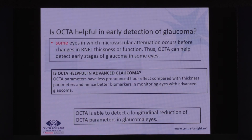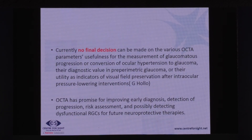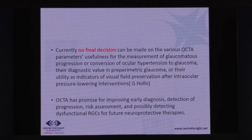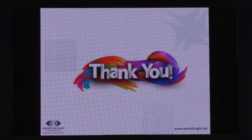Is OCTA helpful in detecting early glaucoma? In some eyes, microvascular attenuation occurs before changes in RNFL, so OCTA can possibly help — though we don't know which eyes these are. In advanced glaucoma, it may definitely help. Currently, no final decision can be made on various OCTA parameters for measuring glaucomatous progression, conversion of ocular hypertension to glaucoma, diagnostic value in perimetric glaucoma, or utility as indicators of visual field preservation after IOP-lowering interventions. Nevertheless, OCTA has promise for improving early diagnosis, detection of progression risk, risk assessment, and possibly detecting dysfunctional RGCs before future neuroprotective therapies. Thank you for your patient listening.